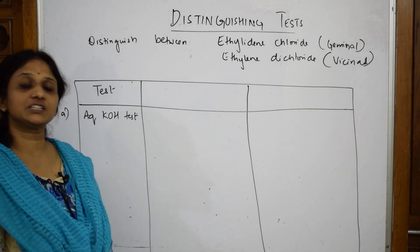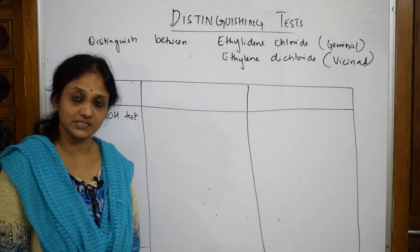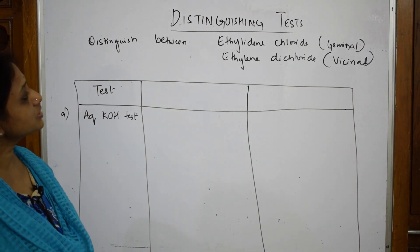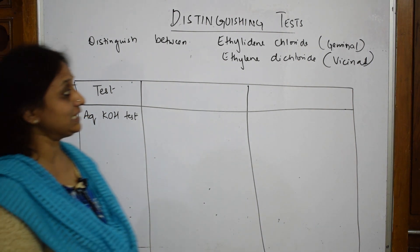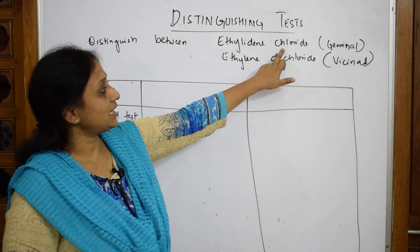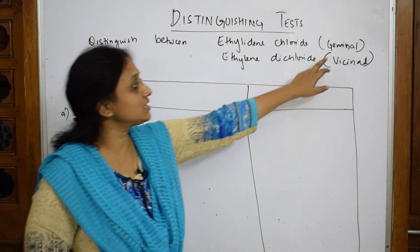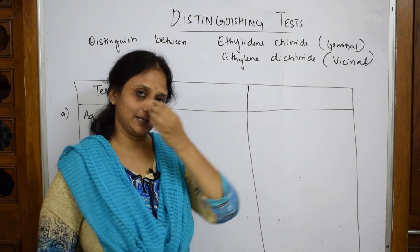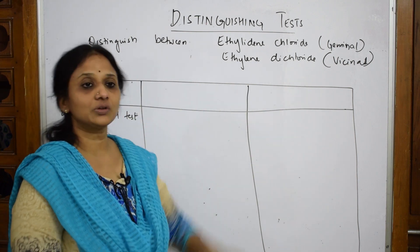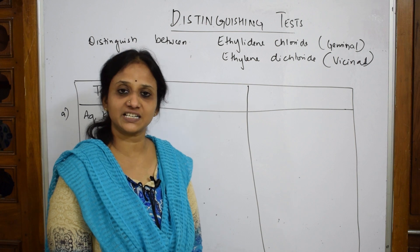Let's come back and see one more distinguishing test in haloalkanes, haloarines. Here they have given us: distinguish between ethylidene chloride and ethylene dichloride. What is the difference between geminal and vicinal halides?